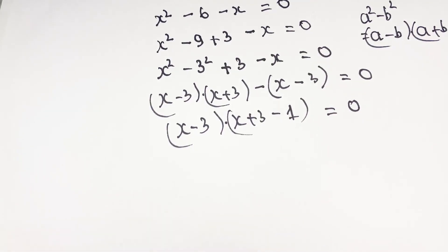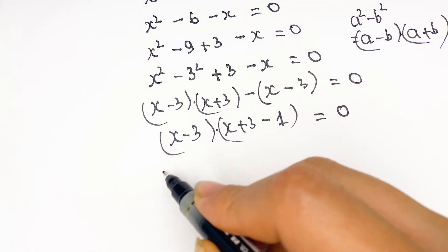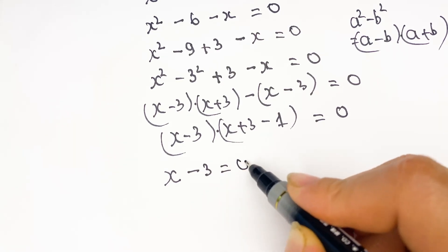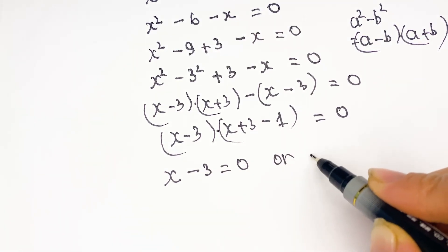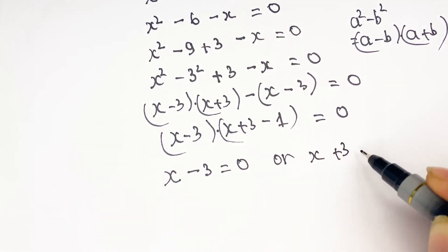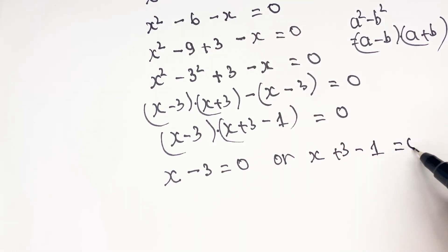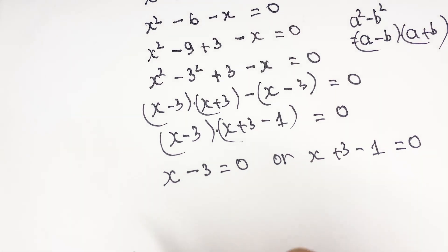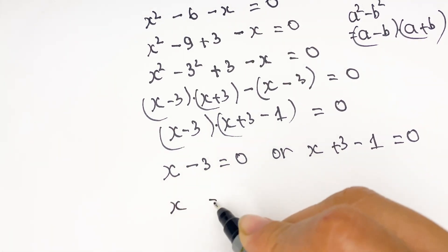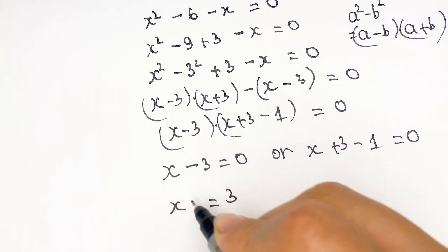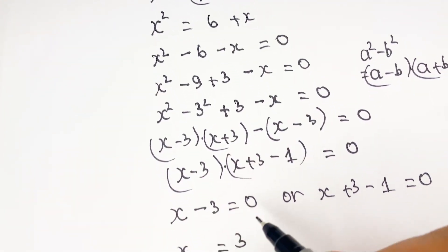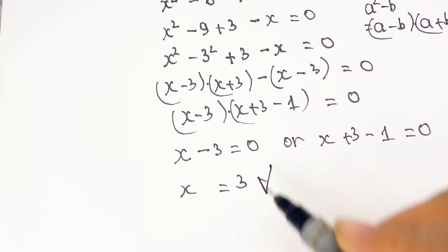I think it's quite simple. Firstly, we have the value of x. x minus 3 equal to 0 or x plus 3 minus 1 equal to 0. So we have x equal to 3. Because it's a positive number, x equal to 3 is correct.